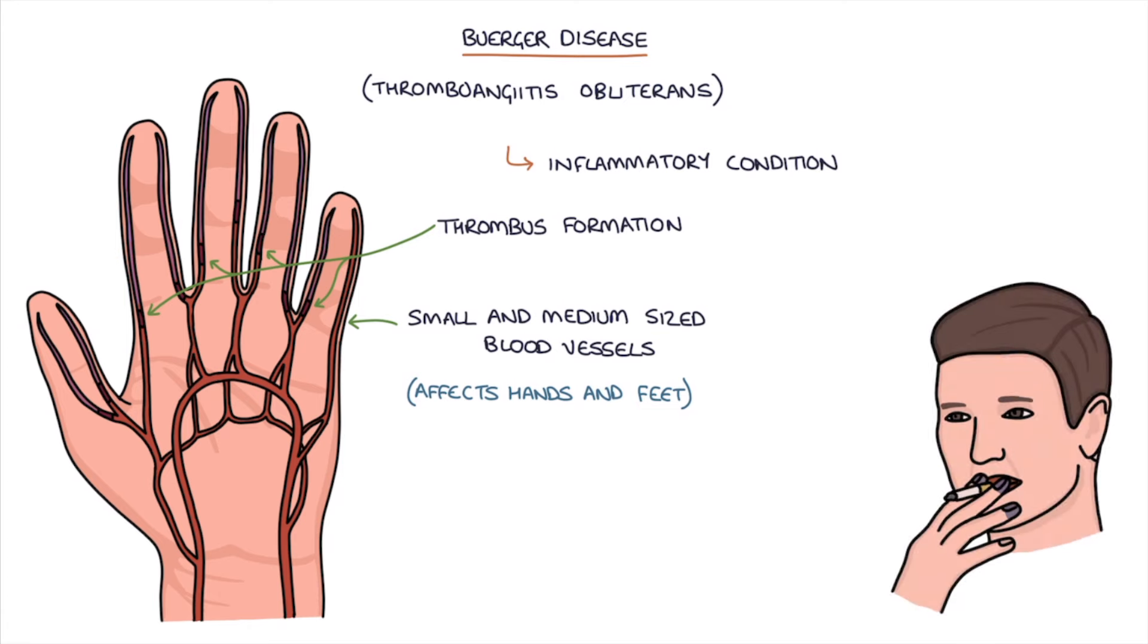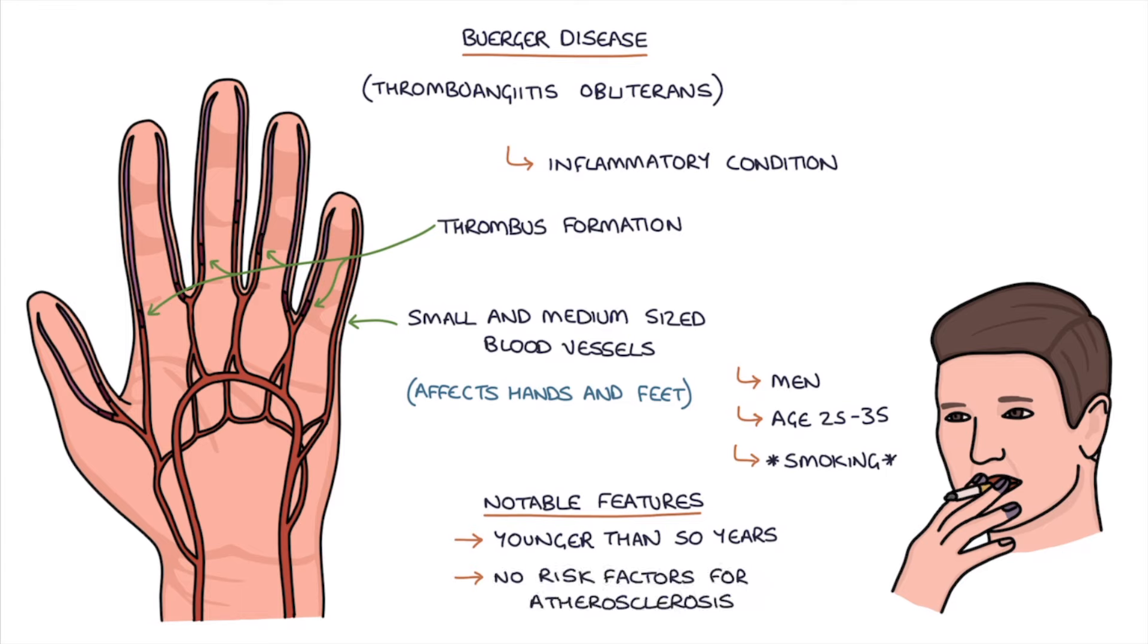Buerger disease typically affects men aged 25 to 35 and has a very strong association with smoking. Notable features which also form part of the diagnostic criteria are that patients are younger than 50 years of age and do not have risk factors for atherosclerosis other than smoking.